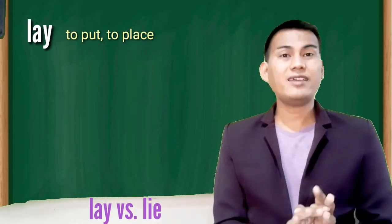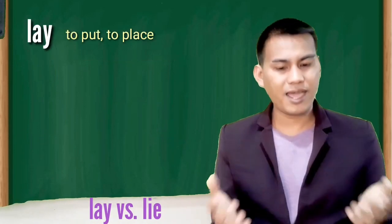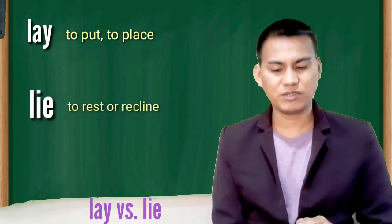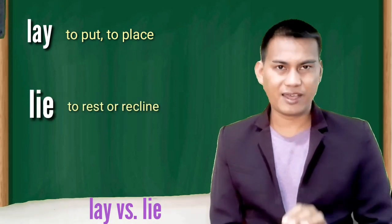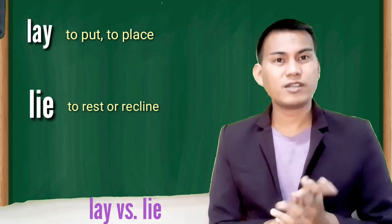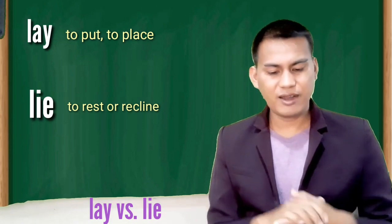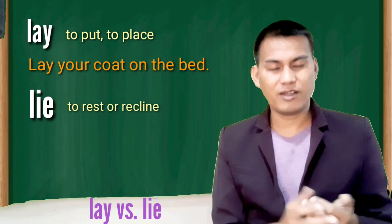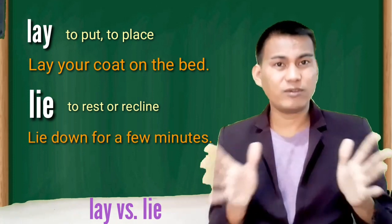Lay versus lie. Lay means to put or to place. Forms of lay are usually followed by a direct object. Lie on the other hand means to rest or recline or to be positioned. Forms of lie are never followed by a direct object. Lay your coat on the bed. Lie down for a few minutes.